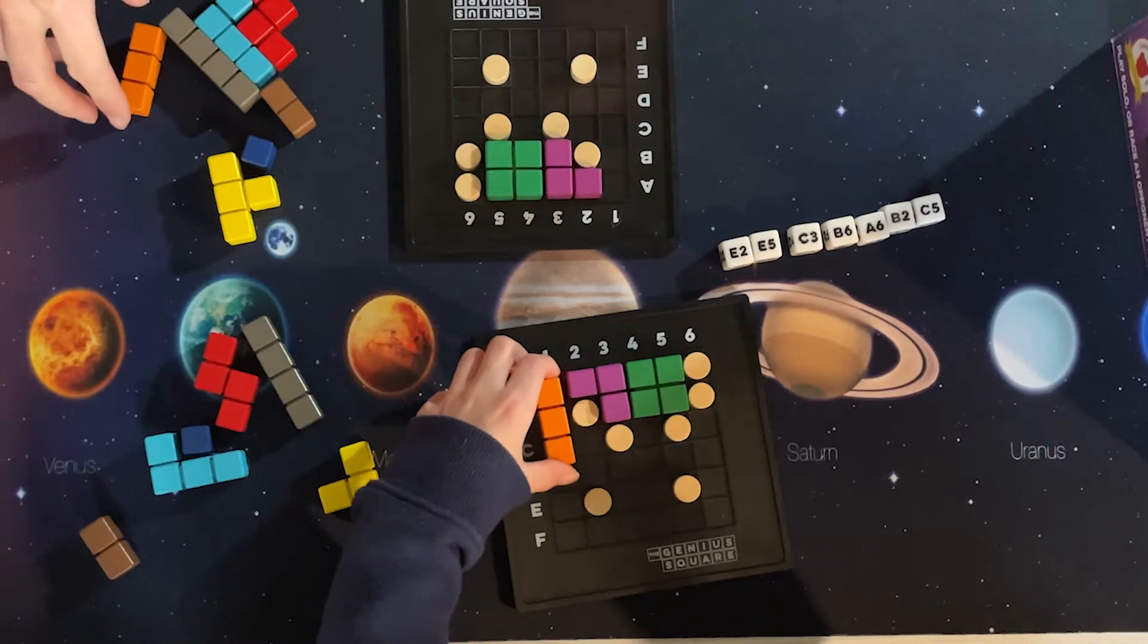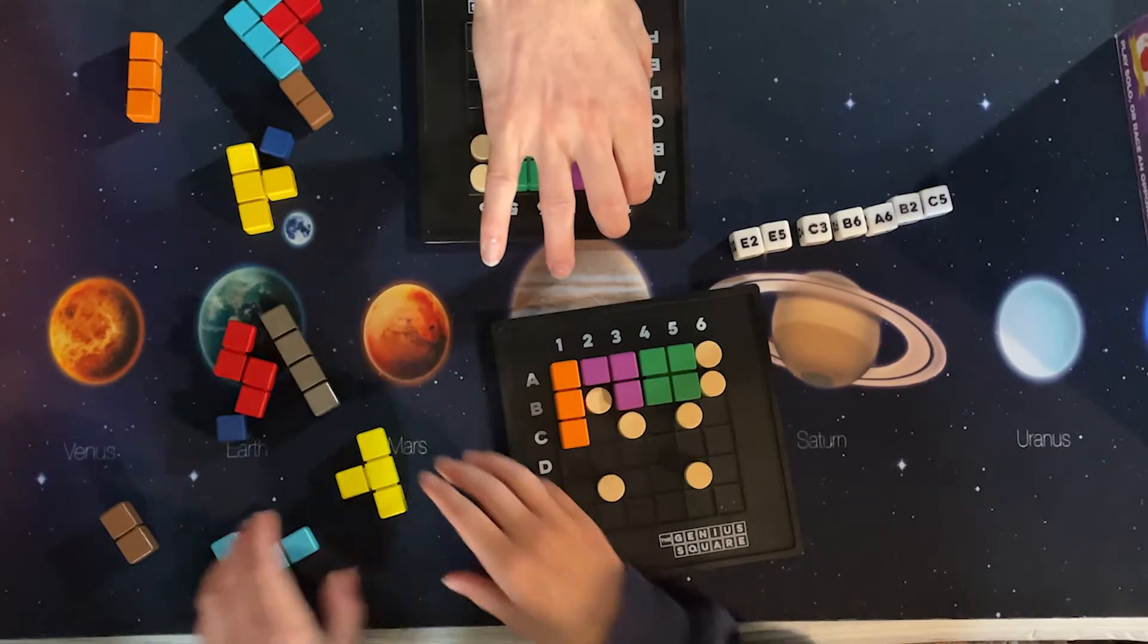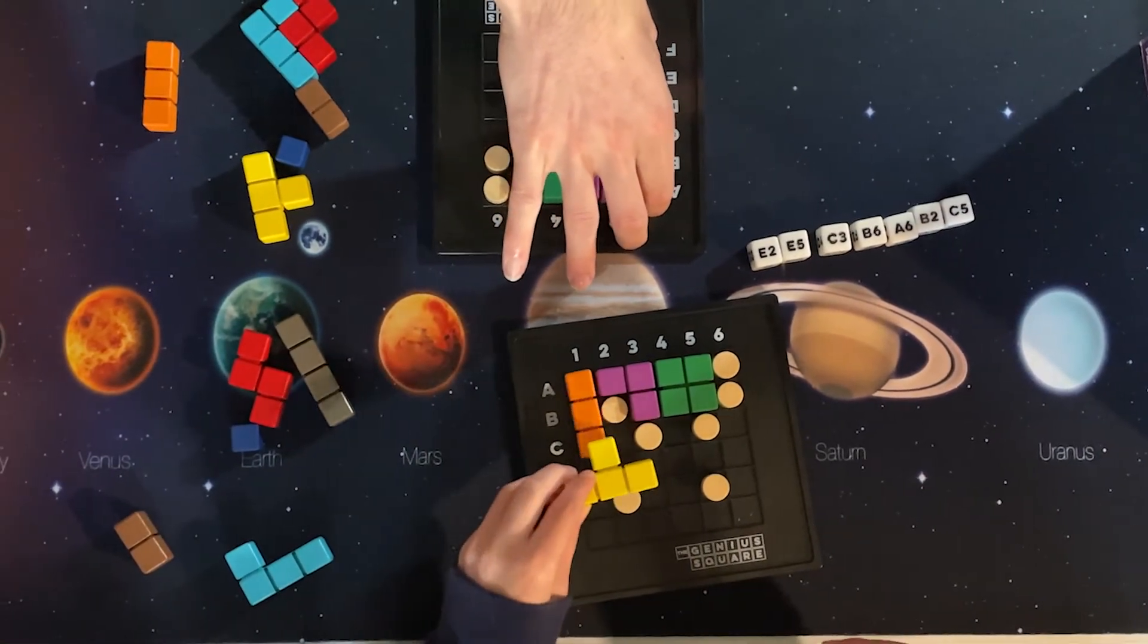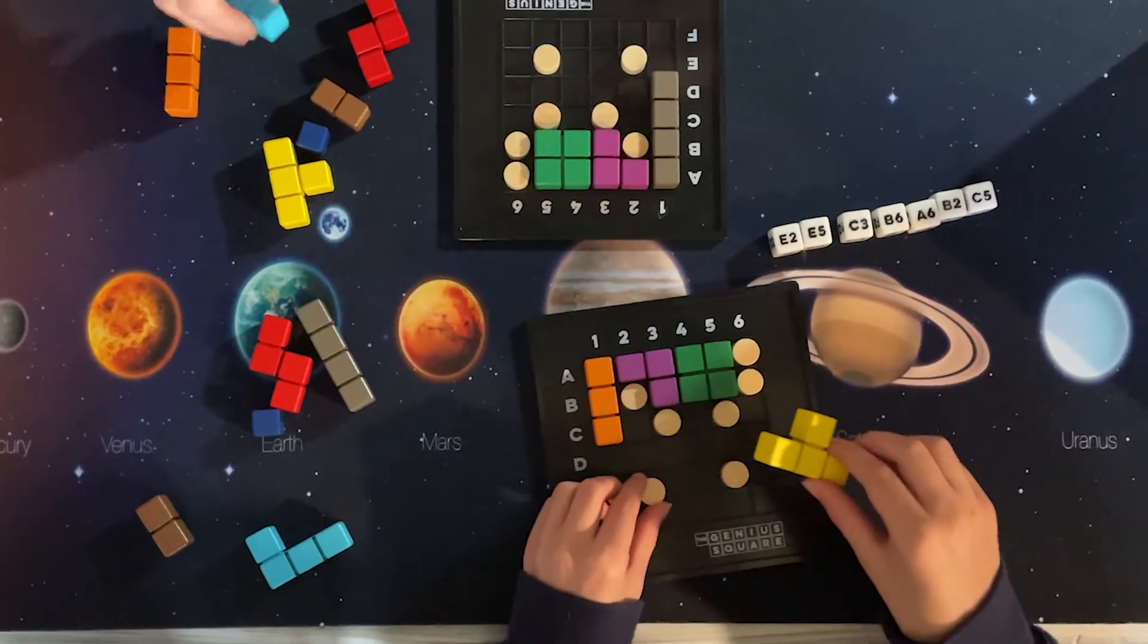Now rolling the dice will give you one of over 60,000 possibilities of puzzles and every one of these puzzles, no matter how the dice land, is always going to be solvable. Sometimes you'll find the puzzles get solved very quickly.